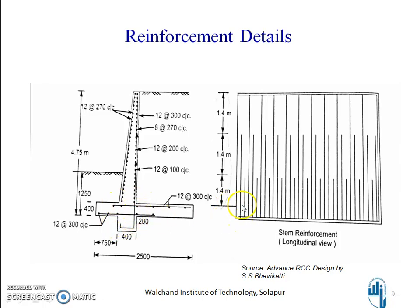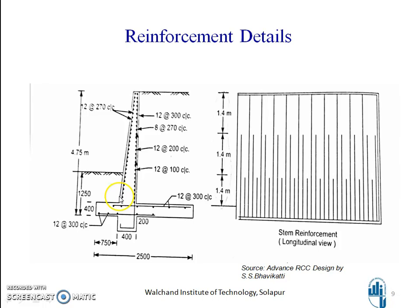The main steel is placed closer together in the lower one-third height where pressure is maximum — 12 mm @ 100 mm c/c. In the next one-third height it becomes 12 mm @ 200 mm c/c. And in the top portion it is 12 mm @ 300 mm c/c. Perpendicular to this, the distribution steel is 12 mm @ 270 mm c/c. On the outer face, away from the earth fill, minimum steel is provided both vertically and horizontally — both at 12 mm @ 270 mm c/c.